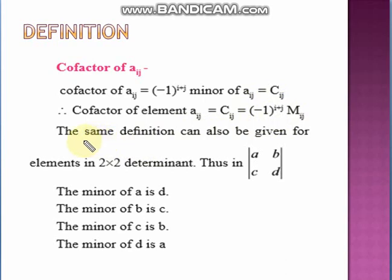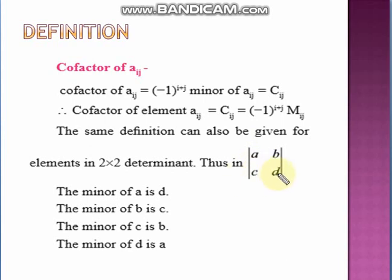We have seen the definitions of minor and cofactor for a 3×3 determinant. The same definition applies to a 2×2 determinant. For a 2×2 determinant with elements A, B, C, D: the minor of A is D, the minor of B is C, the minor of C is B, and the minor of D is A — you omit the row and column where the element occurs and the remaining single element is the minor.